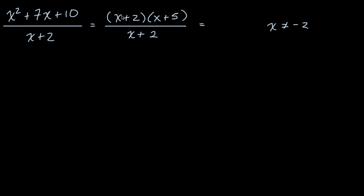The reason why I put that constraint is we can't divide the numerator and the denominator by zero. So for any other values of x, this x plus two will be non-zero and we could divide the numerator and the denominator by that and they would cancel out and we would just be left with x plus five.